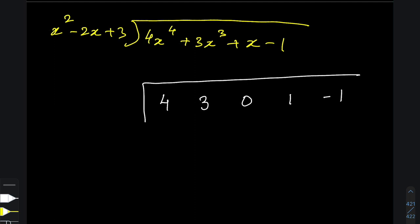Now, write the divisor like this: 1, take a minus common, 2 minus 3. Okay? Put a dash here. 4, copy down. Now, multiply 2 minus 3 with 4. So that will give you 8 minus 12. But write it in these positions.